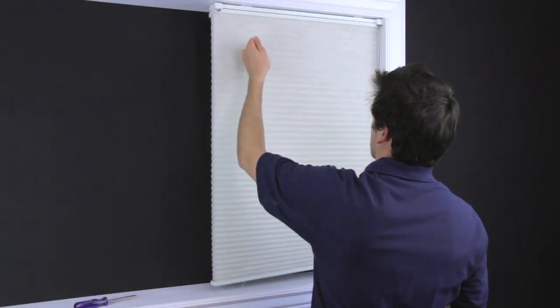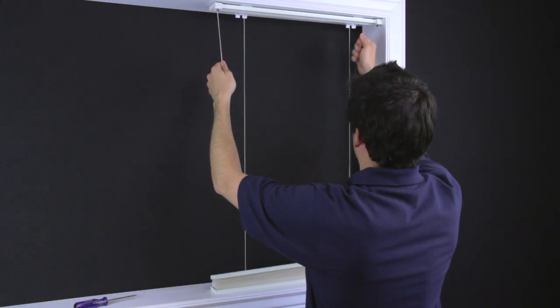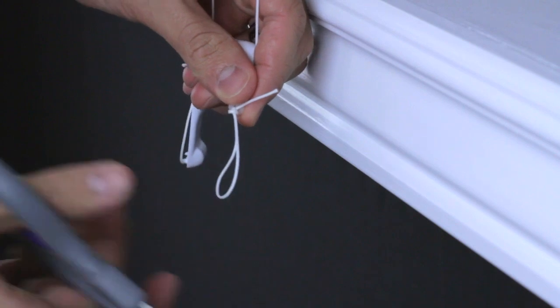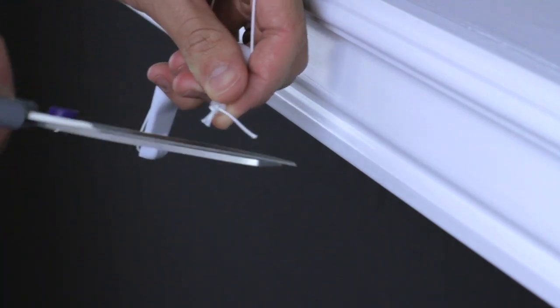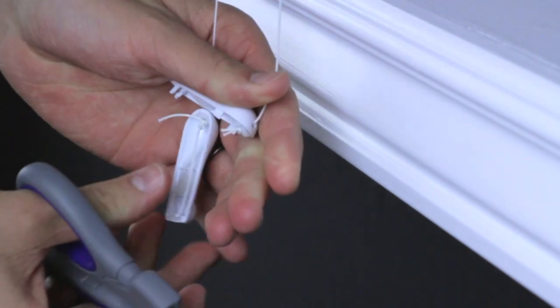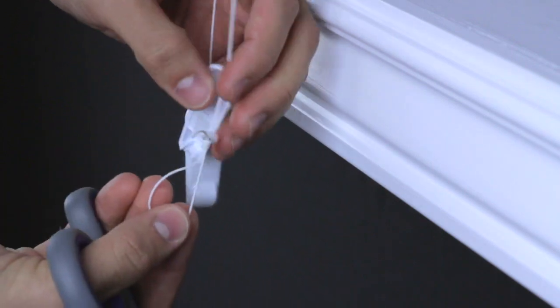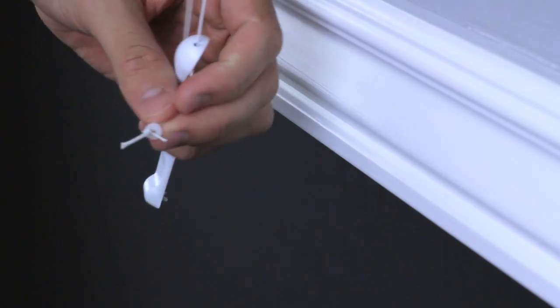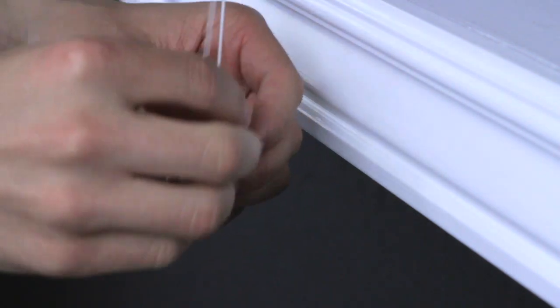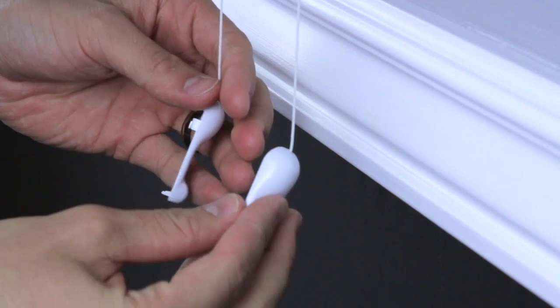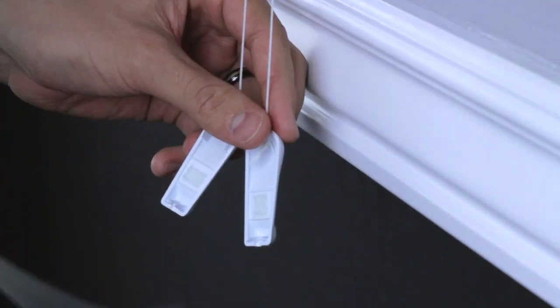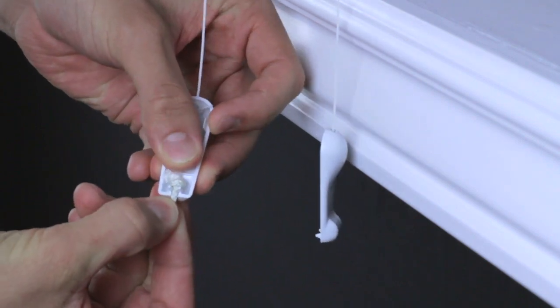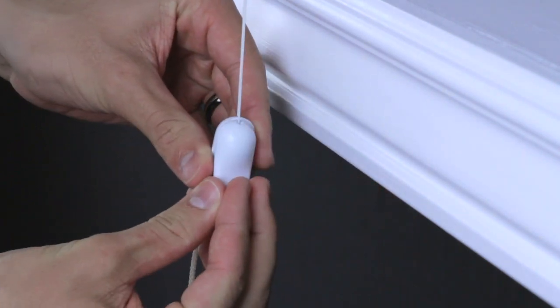Test the shade, making sure it raises evenly. Snip off the excess cord. Attach the pull cord and snap the halves together.